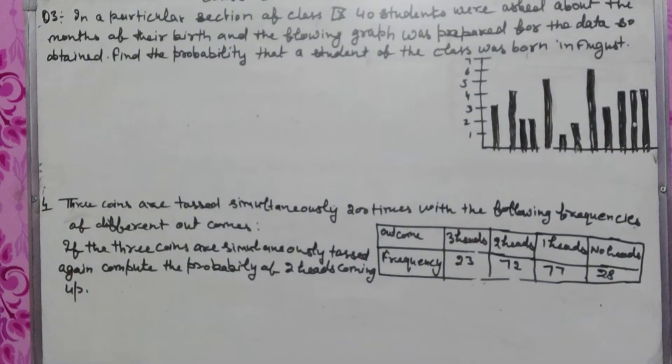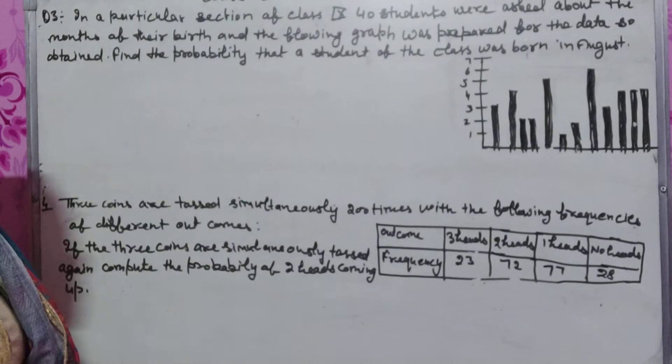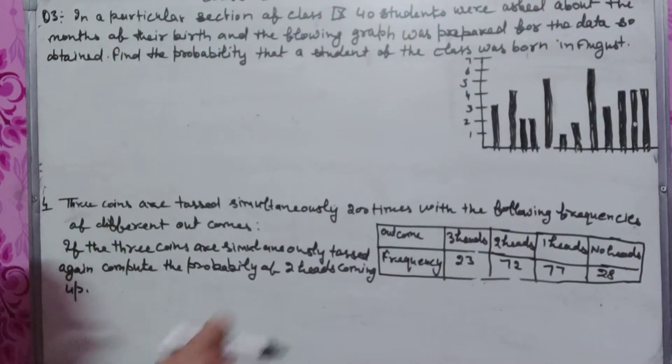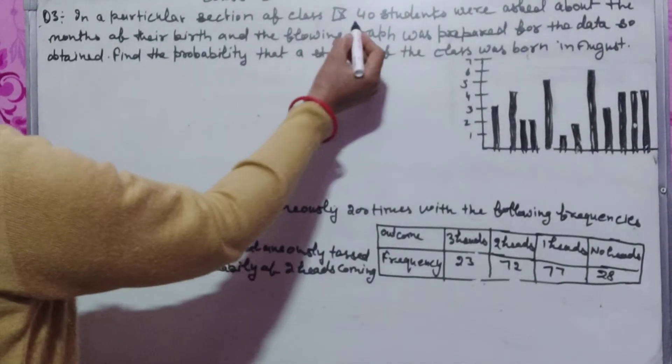Find the probability that a student of the class was born in August. Total students hamar paas hai 40.